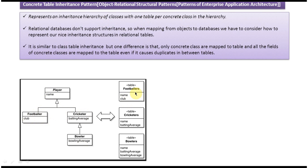The Cricketers table has name and batting average columns. The Bowlers table has three columns — name, batting average, and bowling average — because Bowler inherits from Cricketer which inherits from Player. This is how we define tables for this inheritance hierarchy.